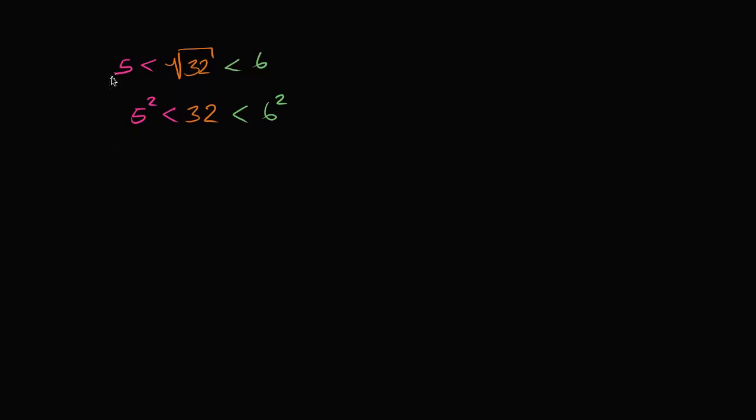Notice, to go from here to here, to go from here to here, and here to here, all we did is we squared things. We raised everything to the second power, but the inequality should still hold. So the square root of 32 should be between 5 and 6. It's going to be 5 point something. Let's do another example.